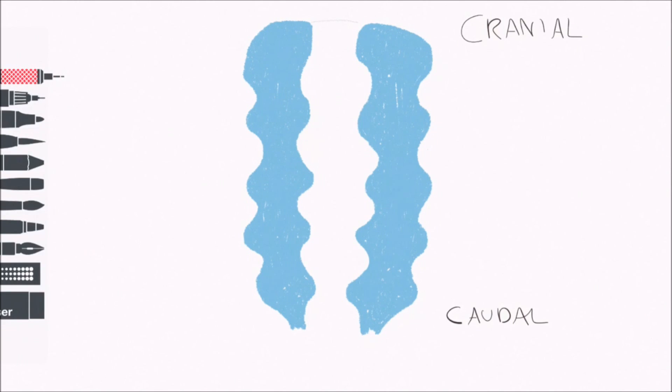Hello and welcome to this embryology video. In the last video, we discussed the basics of the pharyngeal arches. In this one, we will talk about the specifics of the tongue and the thyroid.